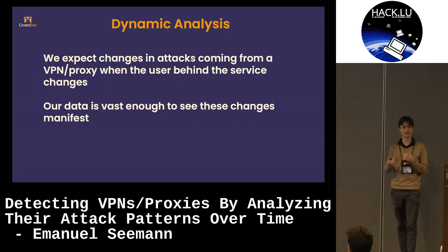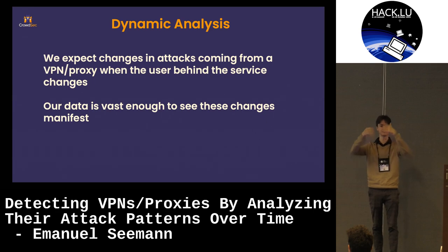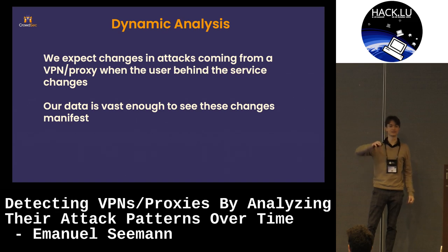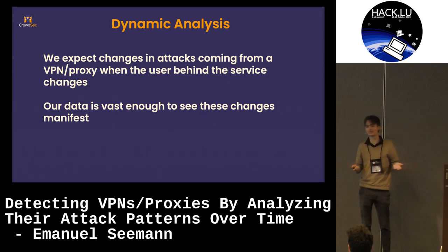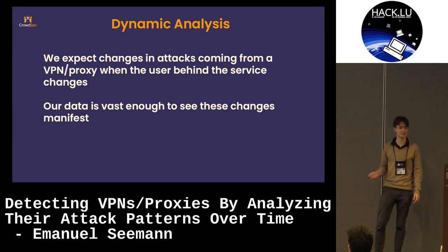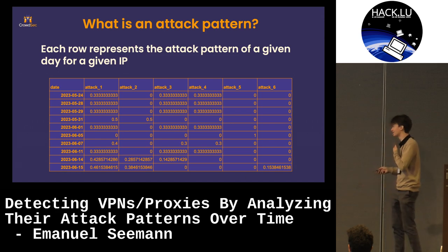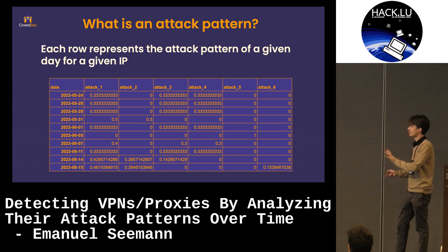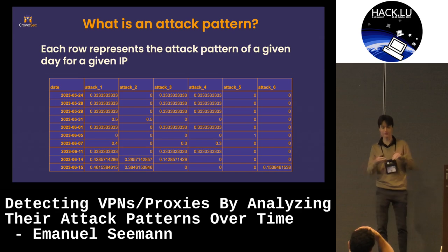The basic insight is: attackers use anonymization when interrupted attacks are still successful. Marked spam is a clear example — if your IP gets banned you just get a new one and keep going, same with port scans. For dynamic analysis, we hypothesize there will be changes in traffic coming from a VPN or proxy when the user behind the service changes. Behind a VPN or proxy machine are many different users targeting different sites, so when a new user takes over we may see this reflected in the type or frequency of attacks.